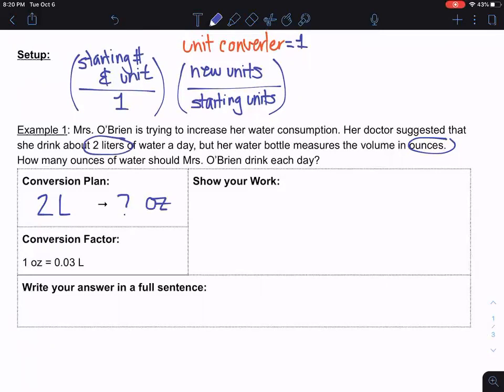My conversion factor, my unit converter is here. And I just Googled this, right? One ounce is the same thing as 0.03 liters. And so now I'm going to do my setup. I'm going to make two fractions multiplied by one another. I'm going to start with what I know, the first part of my unit converter, or the first part of my conversion plan: two liters. I'm going to put that over one.